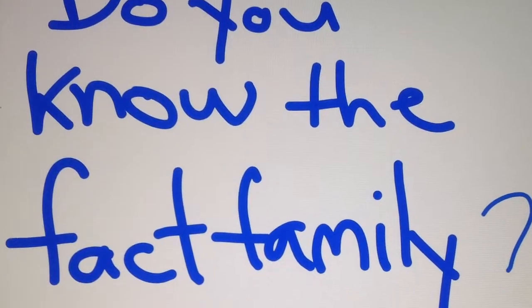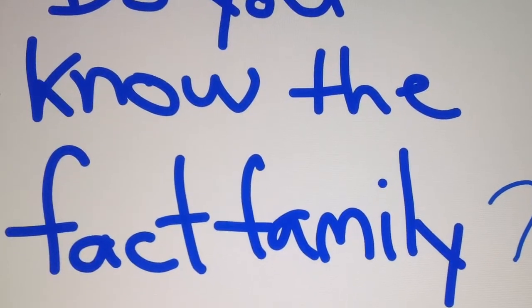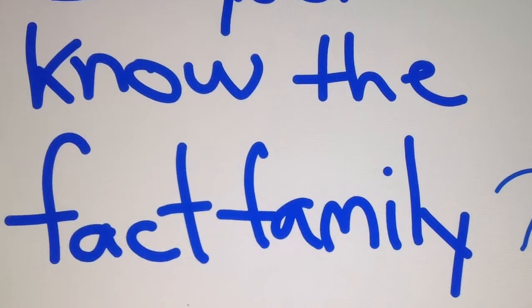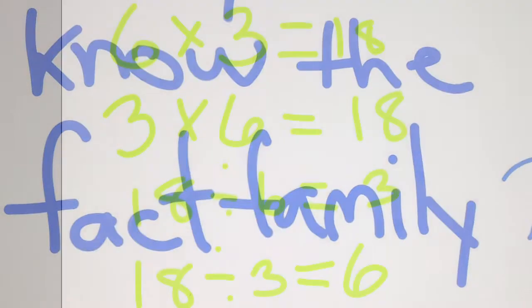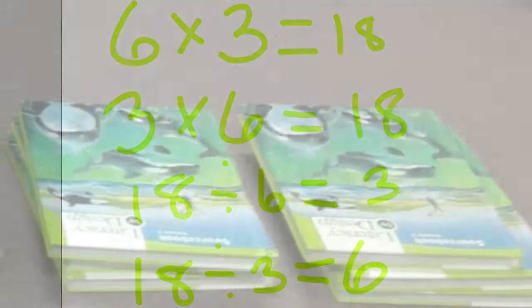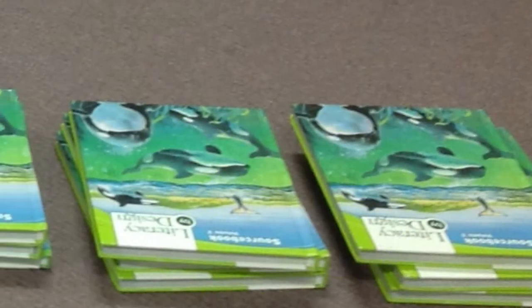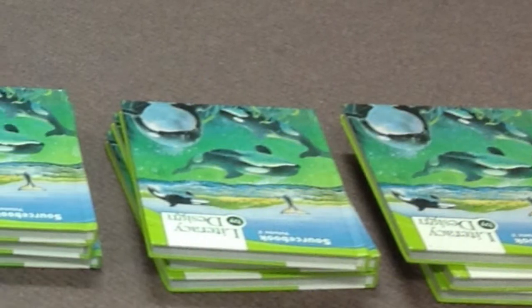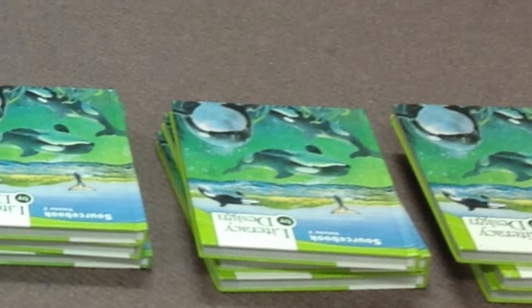Do you know the fact family? Six times three equals eighteen. Three times six equals eighteen. Eighteen divided by six equals three. And eighteen divided by three equals six.